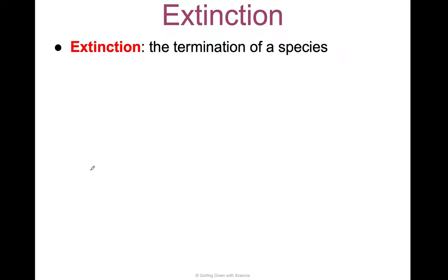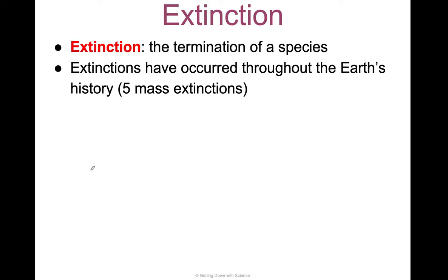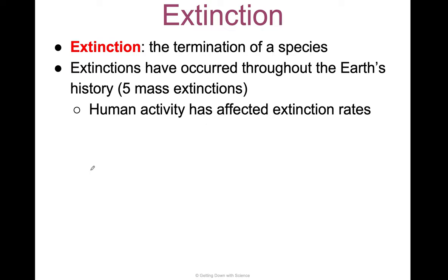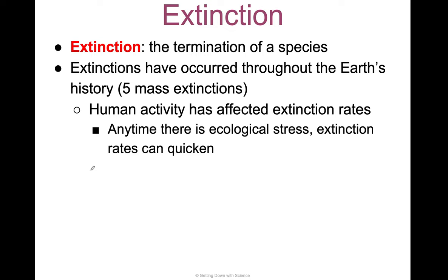Extinction is the termination of a species. We have had five mass extinctions throughout Earth's history, and human activity has affected extinction rates. We are seeing a huge exponential increase in extinctions across the globe. Anytime there is any kind of ecological stress, extinction rates can quicken.